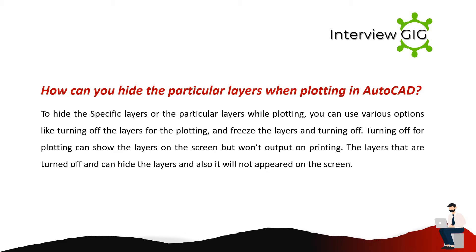How can you hide particular layers when plotting in AutoCAD? To hide specific layers while plotting, you can use various options like turning off the layers for plotting, or freezing the layers. Turning off for plotting will show the layers on the screen but they won't appear on the printed output. Layers that are turned off will hide the layers and they will also not appear on the screen.